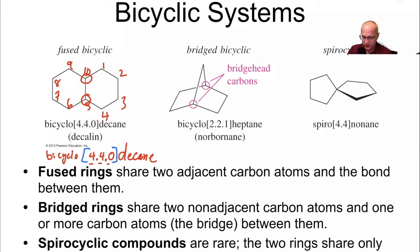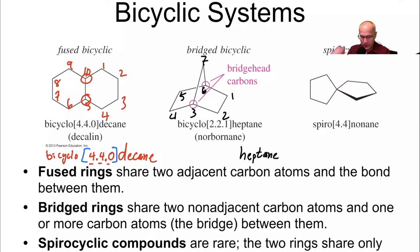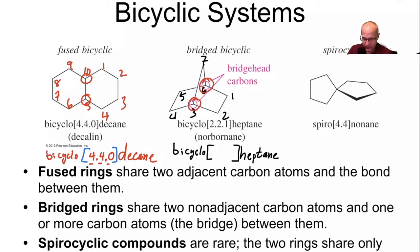Let's apply that same theory to the next example. Count the carbons: 1, 2, 3, 4, 5, 6, 7 — so 7 carbons, it's a heptane. Find the bridgeheads — they're circled. Count to the left: 1, 2. Count to the right: 1, 2. Then count between them: 1. So it's bicyclo[2.2.1]heptane.